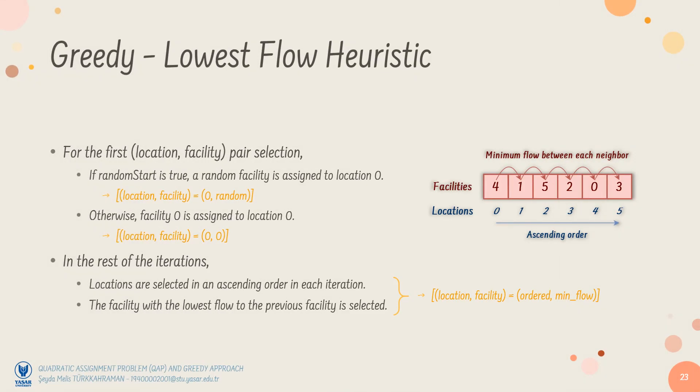In the lowest flow heuristic, this time, locations are selected in an ascending order. And facilities are selected such that two successive facilities have the minimum flow. For the randomStart case, a random facility is assigned to the location 0. Otherwise, the facility 0 is assigned to the location 0, like in the first heuristic.